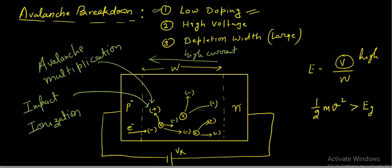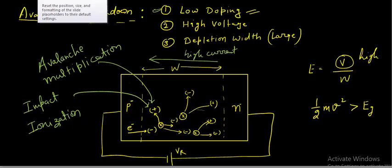You may be asked to write a short note or the differences between avalanche breakdown and Zener breakdown. So all the differences must be clear: high doping vs. low doping, low voltage vs. high voltage, tunneling vs. impact ionization, field ionization vs. avalanche multiplication.